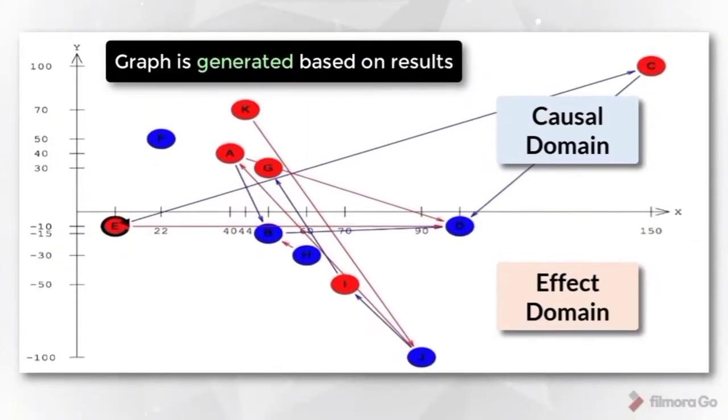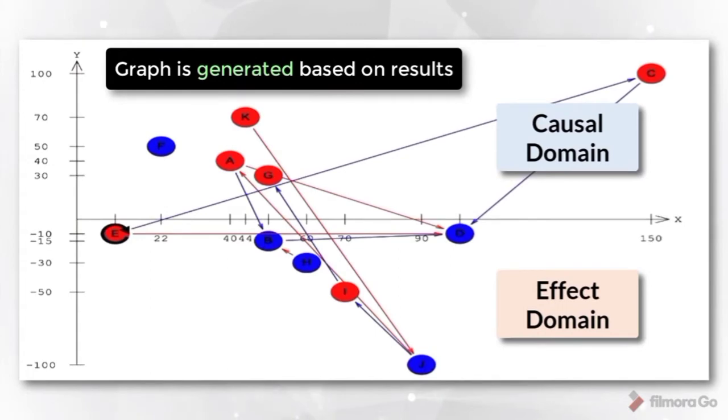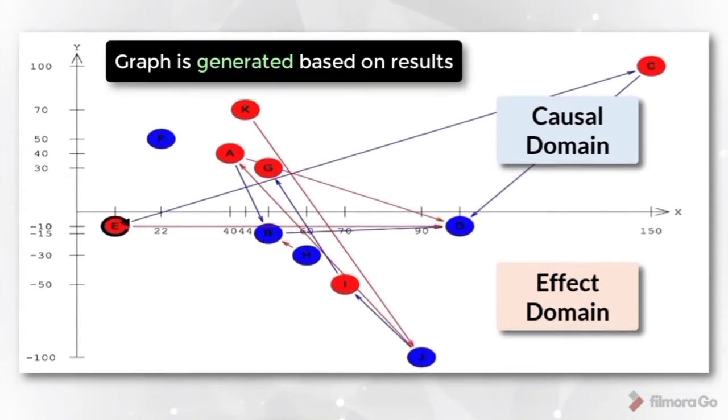The graph is generated based on the results. It separates the critical factors into both causal and effect domains.